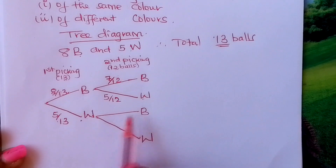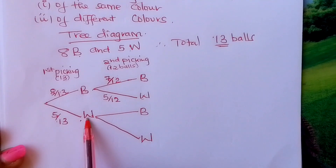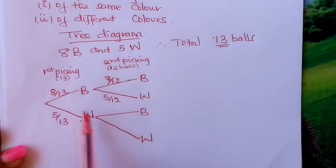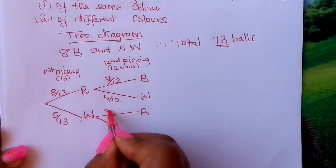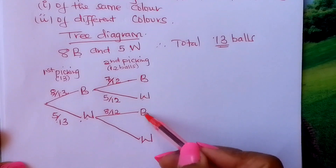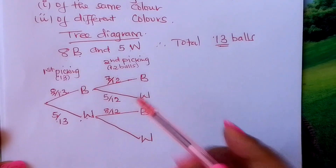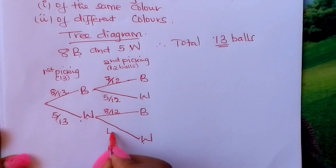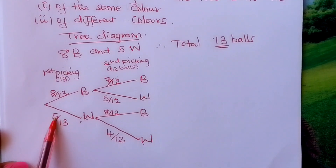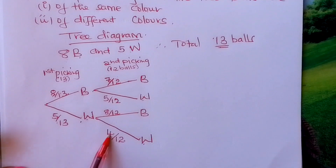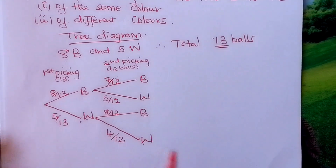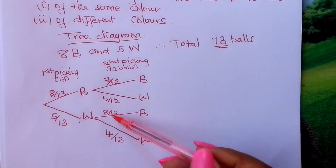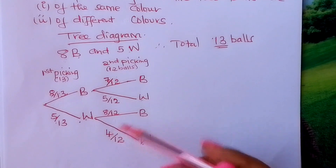From the white branch: you had picked a white ball first. For the second pick being black, you had not picked any black, so there are still eight black balls out of twelve. For white, you had picked one white, so there are now four white balls remaining out of twelve. Again, these two fractions add up to one.